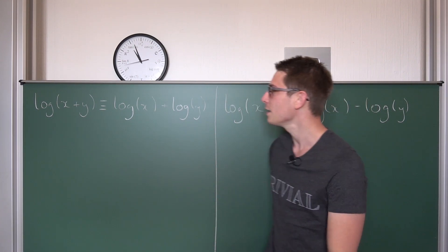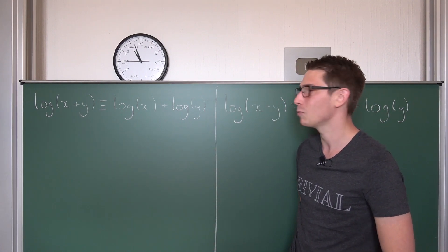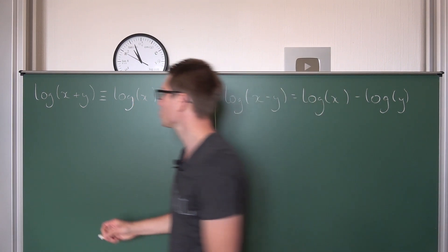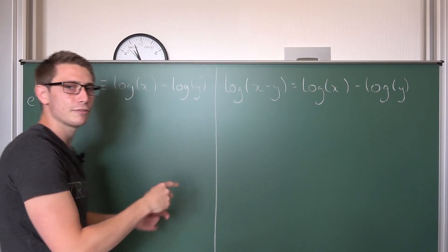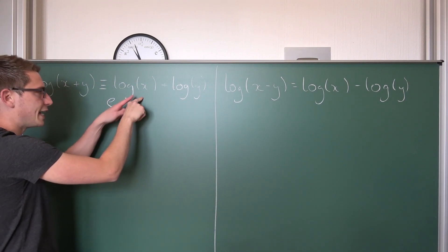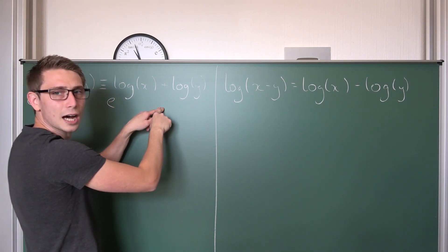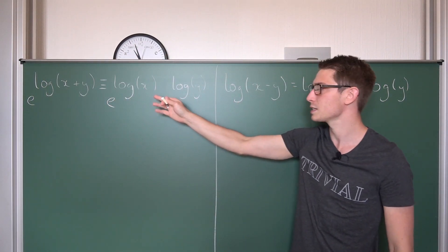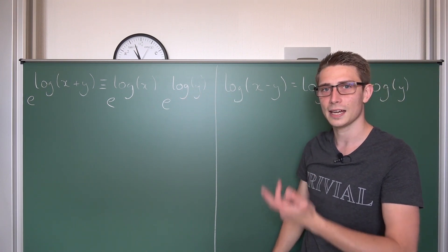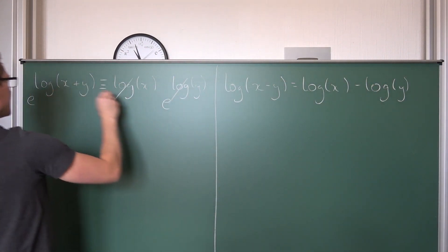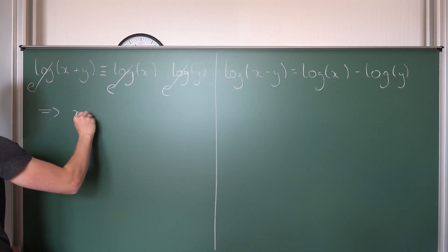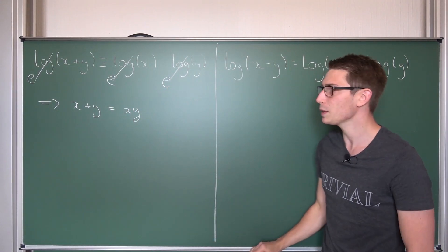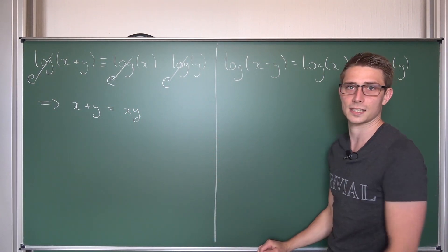Okay, log(x + y) = log(x) + log(y). We are going to make use of exponentiation on both sides using base e. So if we have e to the (a + b), that's the same as e to the a times e to the b. This is the same as e to the log(x) times e to the log(y), and the logarithms cancel out with the e's, leaving us overall with the simple equation x + y = xy.